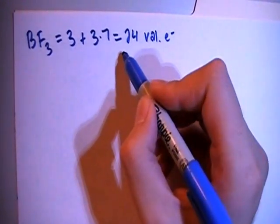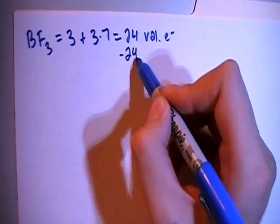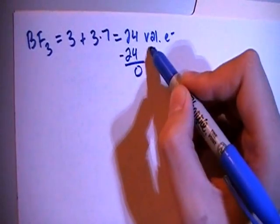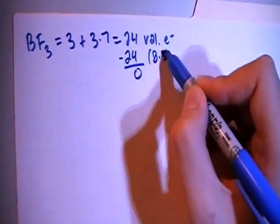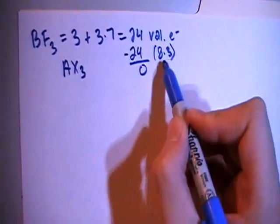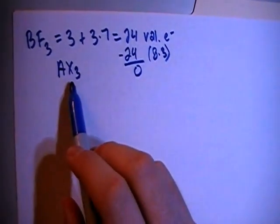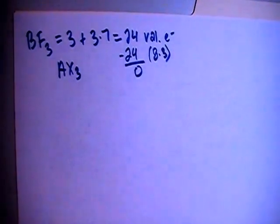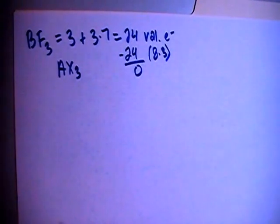And we can subtract out the largest multiple of 8, so subtract out 24 gives you 0, and since 24 is equal to 8 times 3, that means that this is going to have an AX3 structure, meaning central atom surrounded by 3 peripheral atoms and 0 non-bonding pairs.